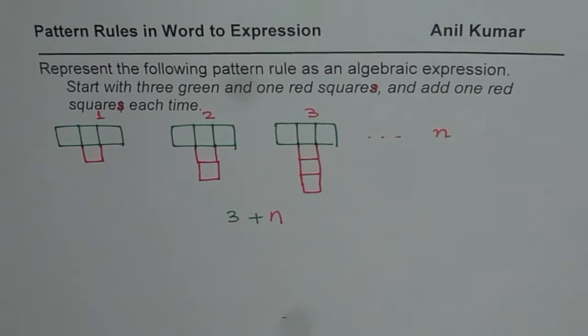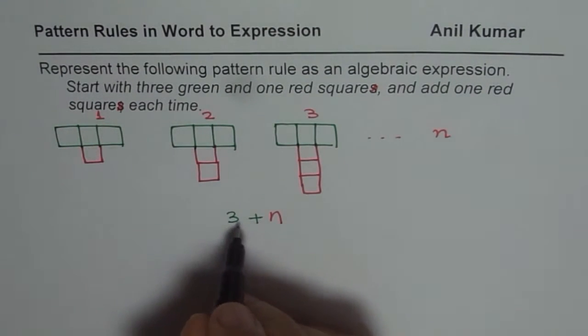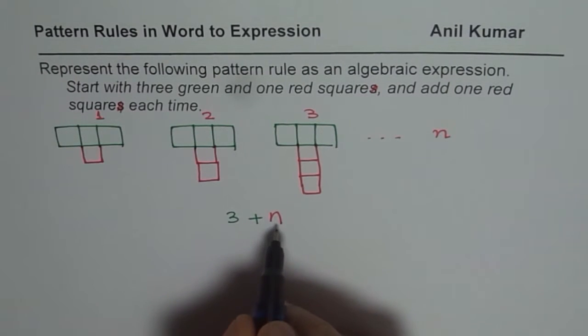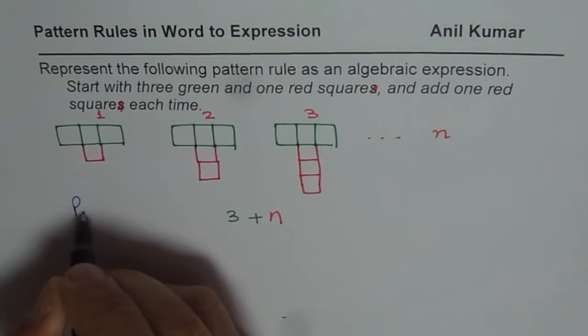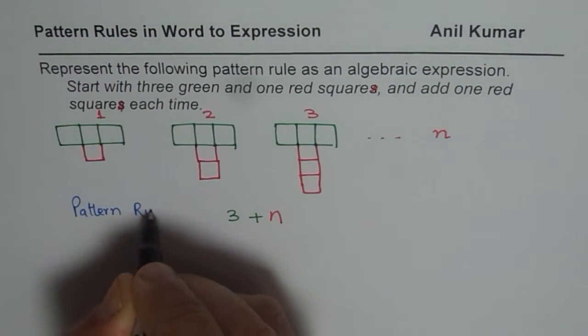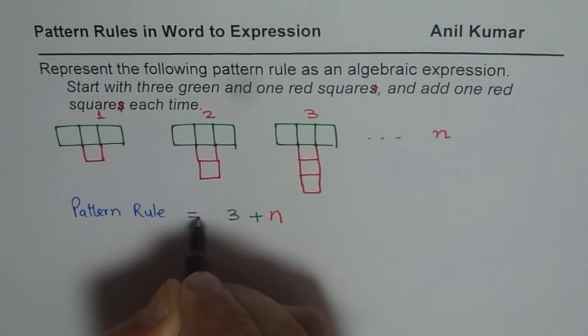So that is how you can quickly get to your pattern rule, and this is called an algebraic expression since we have a variable here. So that is the pattern rule for the given description. Pattern rule is equal to 3 plus n.